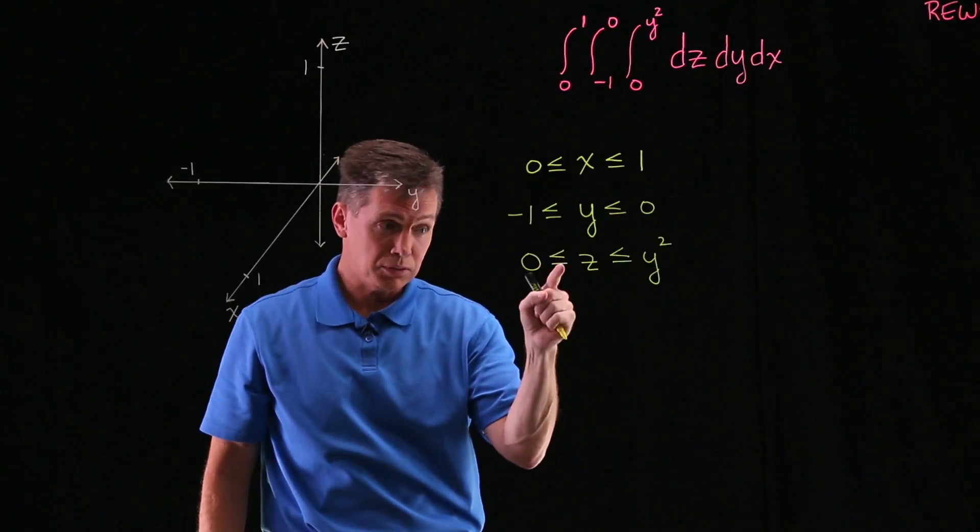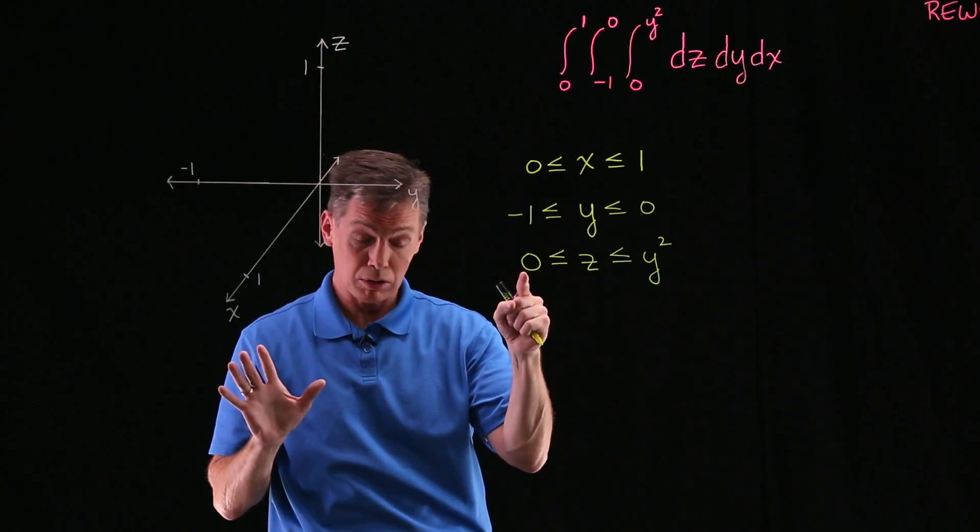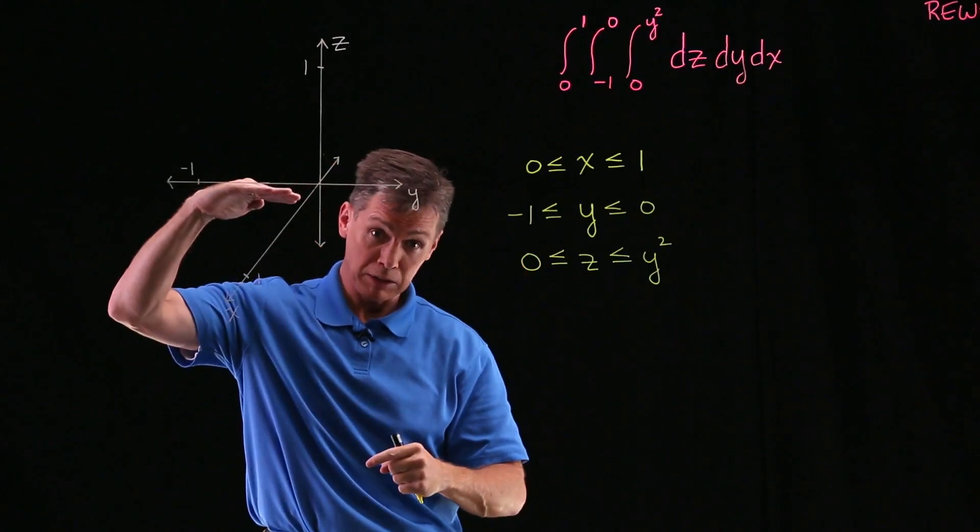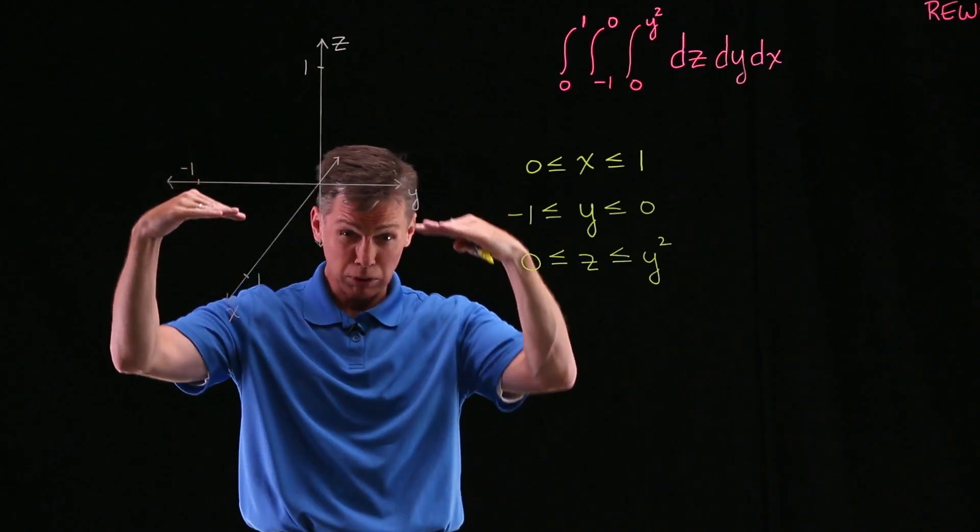And then finally, this z expression, no lower than 0. That's not too difficult in terms of visualizing. That means you're not going down below floor level.